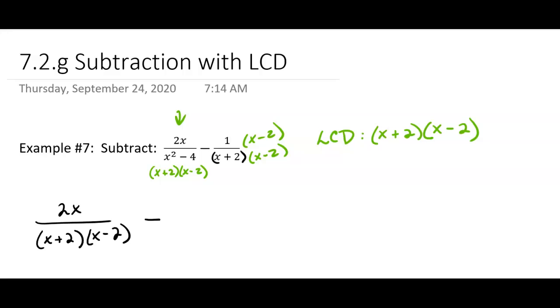So we have to make a decision here on how we want to do it. I'm going to write 1 times (x minus 2) over (x plus 2)(x minus 2). Okay, so the denominators are the same, and then we're going to have to subtract.